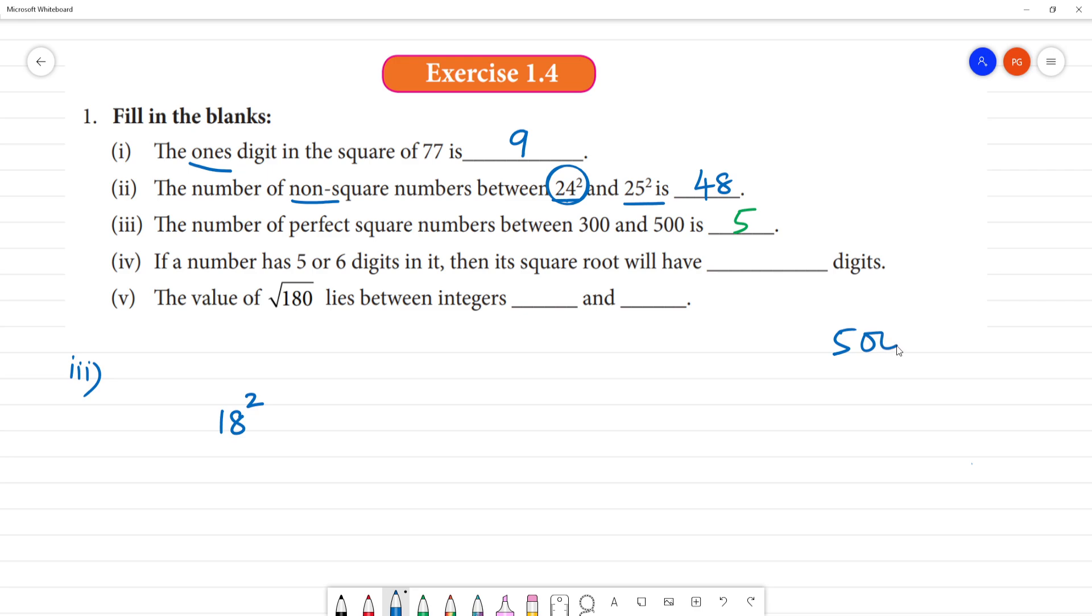Now for 500, we use long division to find square root. Group the digits. 2 times 2 is 4. 5 minus 4 is 1. Bring down 00. Multiply by 2 to get 4. If we try 42 times 2, we get 84, with remainder 16. So 22 squared is less than 500, but 23 square is greater than 500. In between, the numbers are 18 square, 19 square, 20 square, 21 square, 22 square.